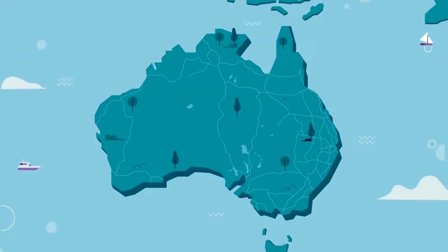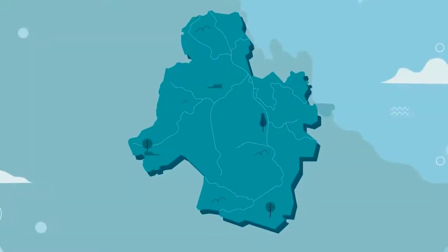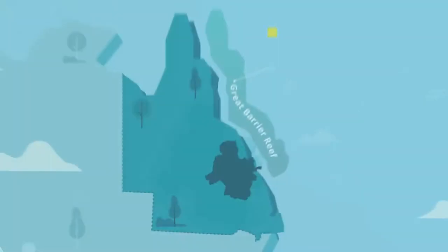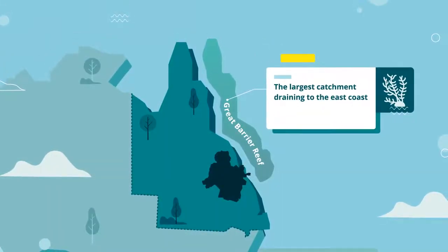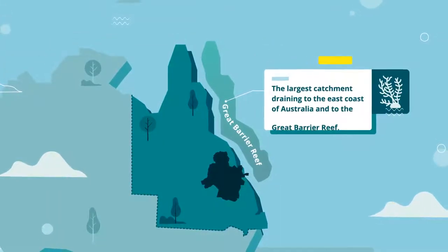Fitzroy Partnership for River Health assesses the aquatic ecosystem health of the Fitzroy Basin, which is the largest catchment draining to the east coast of Australia and to the Great Barrier Reef.